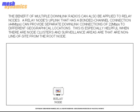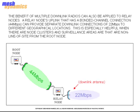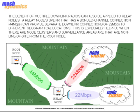The benefit of multiple downlink radios can also be applied to relay nodes. A relay node's uplink that has a bonded channel connection can provide separate downlink connections of 22 Mbps to different geographical locations. This is especially helpful when there are node clusters and surveillance areas that are non-line-of-sight from the root node.